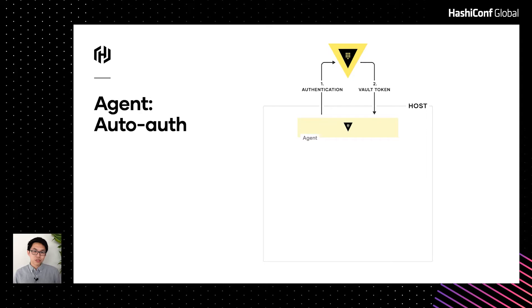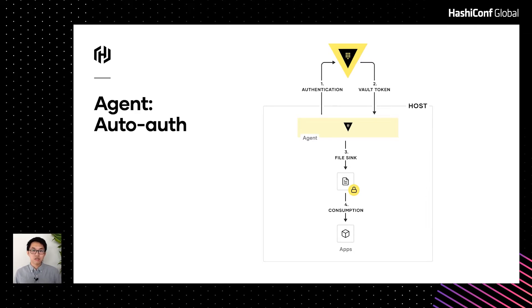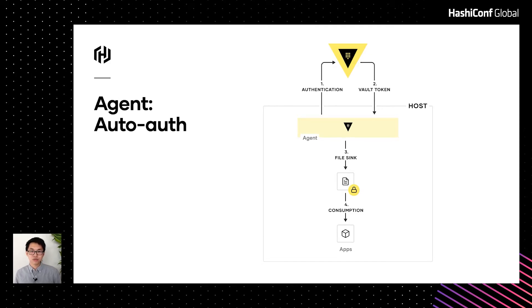Let's take a look at how AutoAuth works. When Agent starts up, it first performs authentication against Vault and receives a Vault token. This token can then be written to disk in what we call a file sync. In addition to file permissions, the token can optionally be protected through Vault's response wrapping system — a trust-on-first-use mechanism — and can also optionally be cryptographically encrypted. Setting up AutoAuth is fairly simple: we specify the auth method to perform authentication against, and optionally any number of syncs to write the token to.